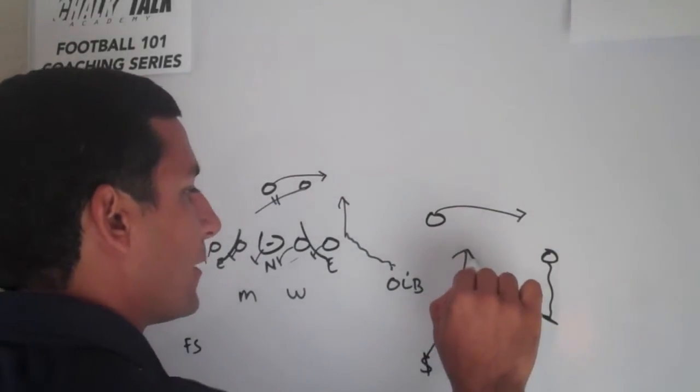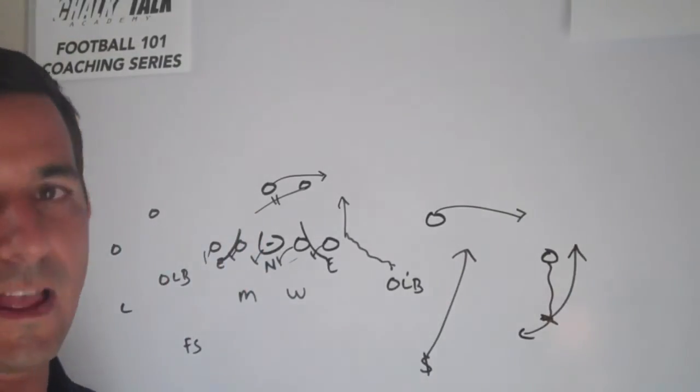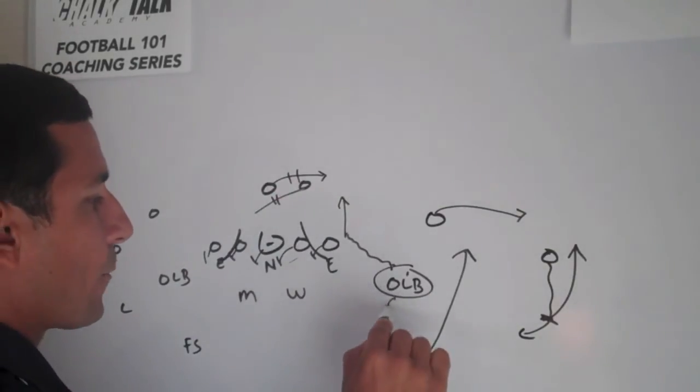Now we've got the strong safety coming over the top. We've got the corner that's got a block to struck there. So it's just option football. It's the zone read. We're going to take away the run. If they pull it, now we've got our outside linebacker who's going to take the quarterback.